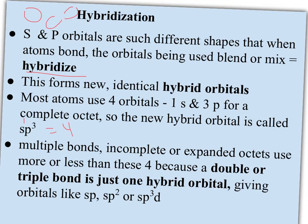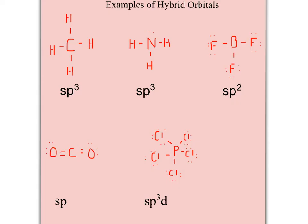Multiple bonds, incomplete and expanded octets, they're going to use more or less than four total pairs, four bonding and shared pairs. So then you get orbitals like SP, which is only using a total of two orbitals, or SP2, which uses three orbitals, or even SP3D, which is going to use five orbitals and have an expanded octet.